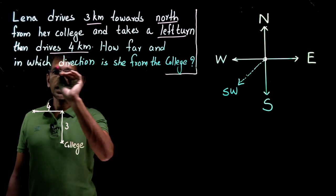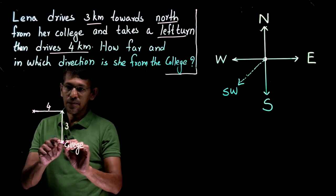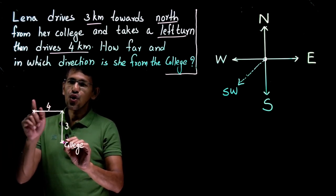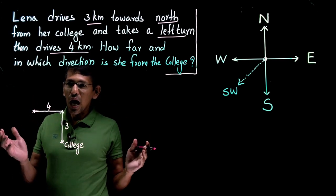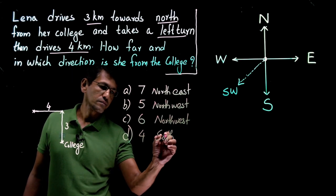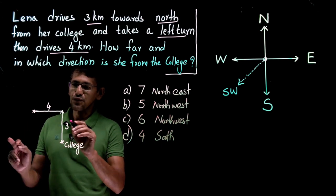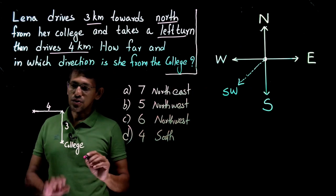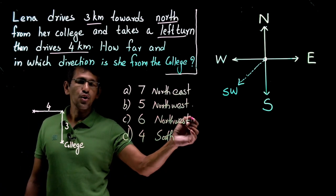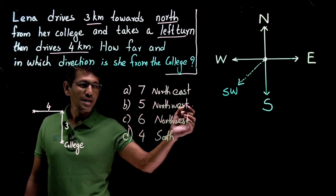The question asks how far and in which direction she is from the college. With respect to the college, she has moved North and then West, so she is in the Northwest direction. Looking at the answer choices, two of them give Northwest, so we also need to calculate the distance. This is the hypotenuse of a right-angled triangle, so we need to find it.